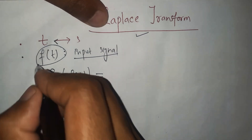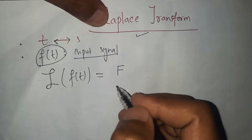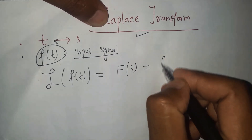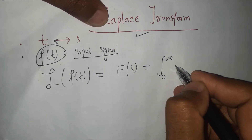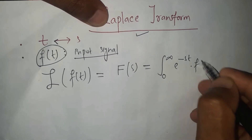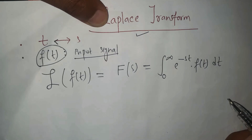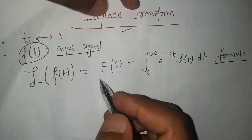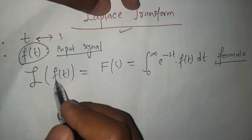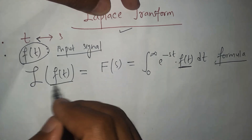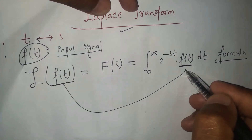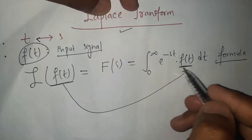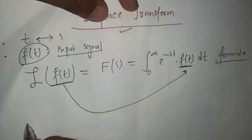The result is written as capital F in the s-domain: F(s). It is defined as the integral from zero to infinity of e to the power of negative st times the function f(t), with integration done with respect to time dt. This is the definition and the formula to calculate the Laplace transformation. Please memorize this formula.